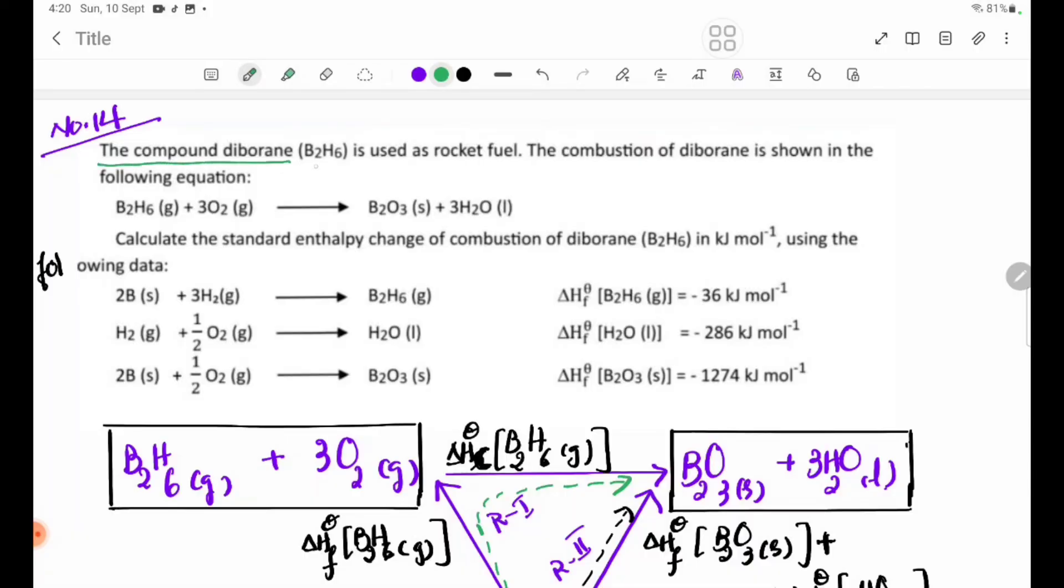The compound diborane B2H6 is used as rocket fuel. The combustion of diborane is shown in the following equation: B2H6 plus 3O2 gas forms B2O3 solid plus 3H2O liquid.